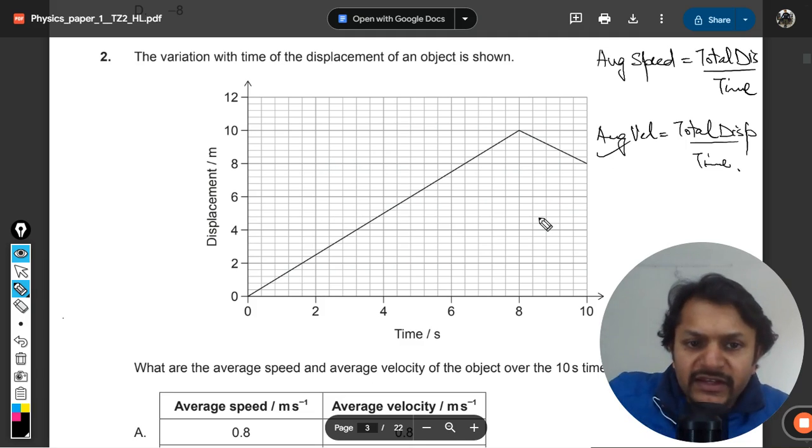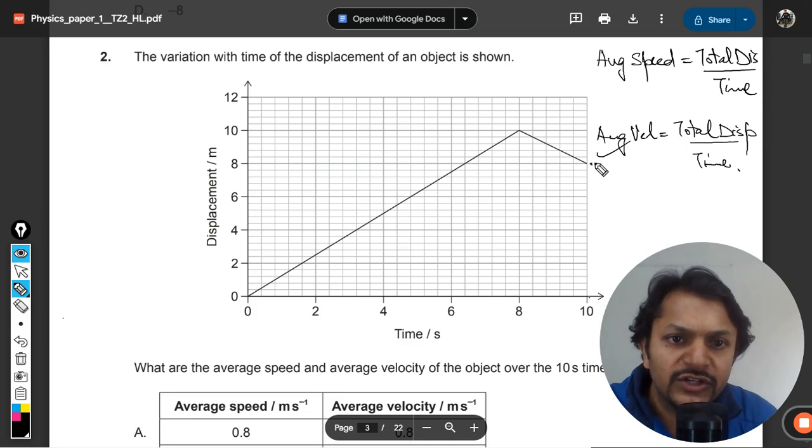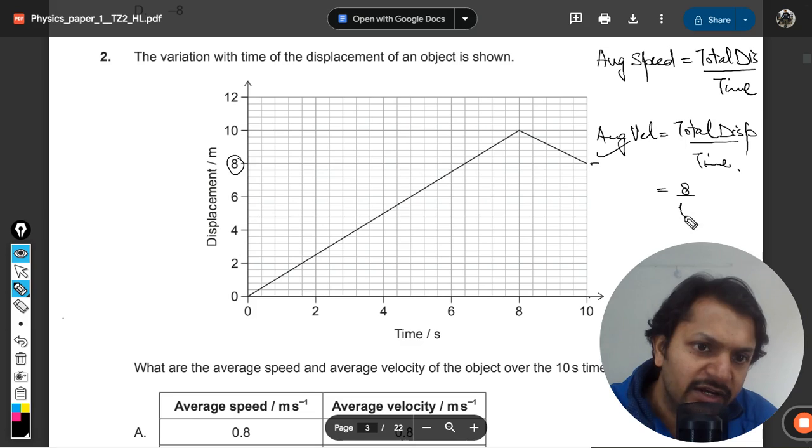Let's first go for average velocity because it will be easy. After 10 seconds, you can clearly find the displacement is 8, so 8 divided by 10 gives 0.8 meters per second.